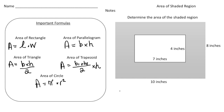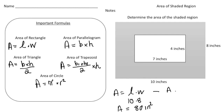Using the formula area equals length times width, I'll first find the area of the larger rectangle. The length is 10 and the width is 8, so 10 times 8 gives us 80 square inches. Now I subtract the area of the smaller rectangle: length 7 inches times width 4 inches equals 28 square inches. Finally, 80 minus 28 gives us an answer of 52 square inches — that's the area of the shaded region.